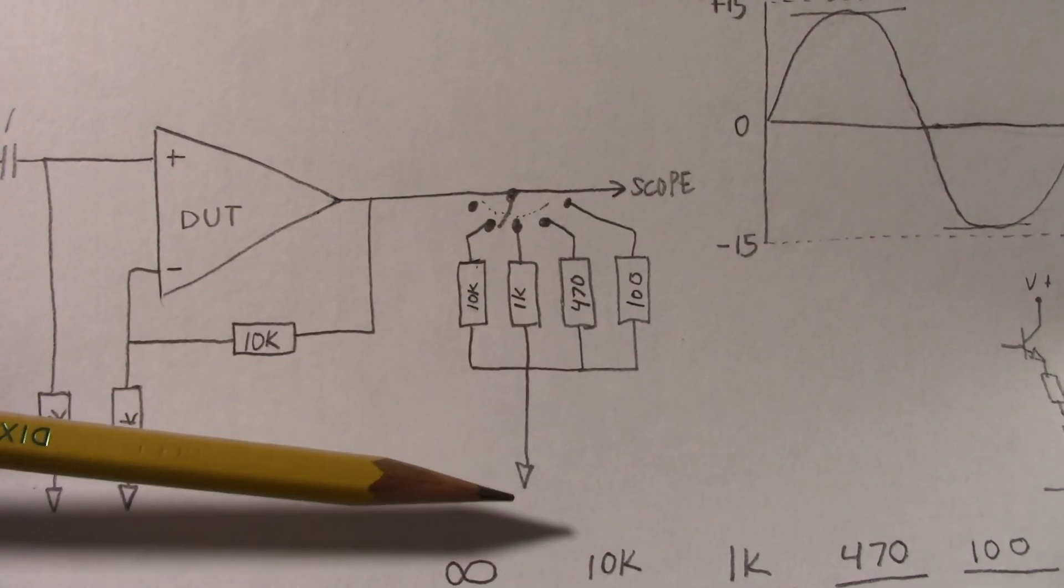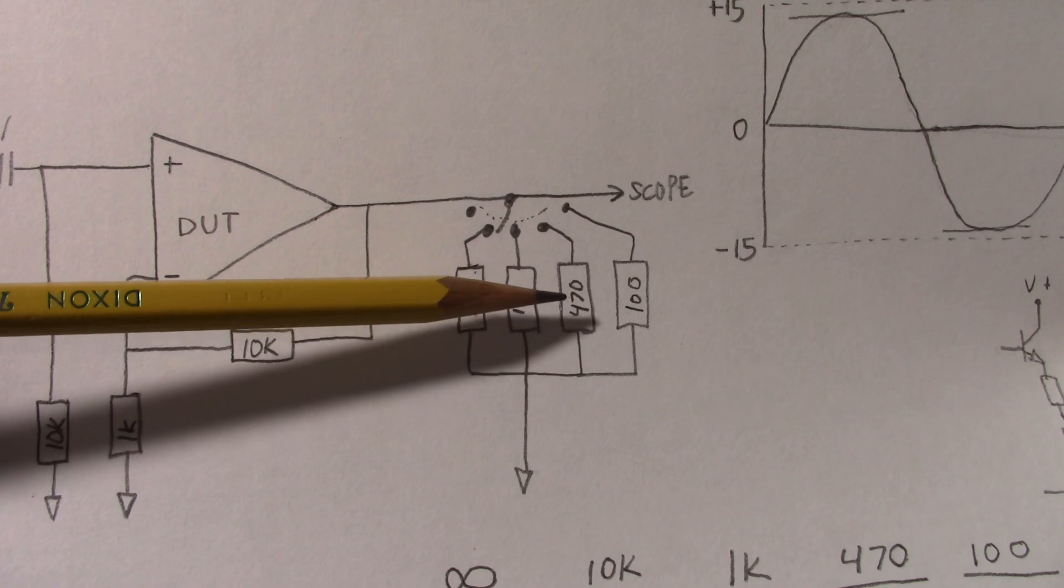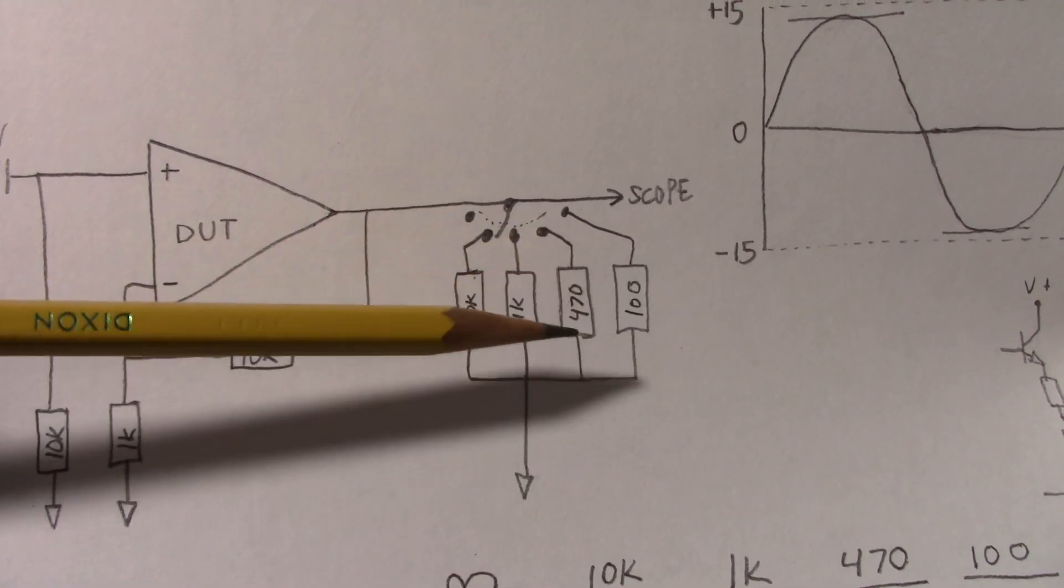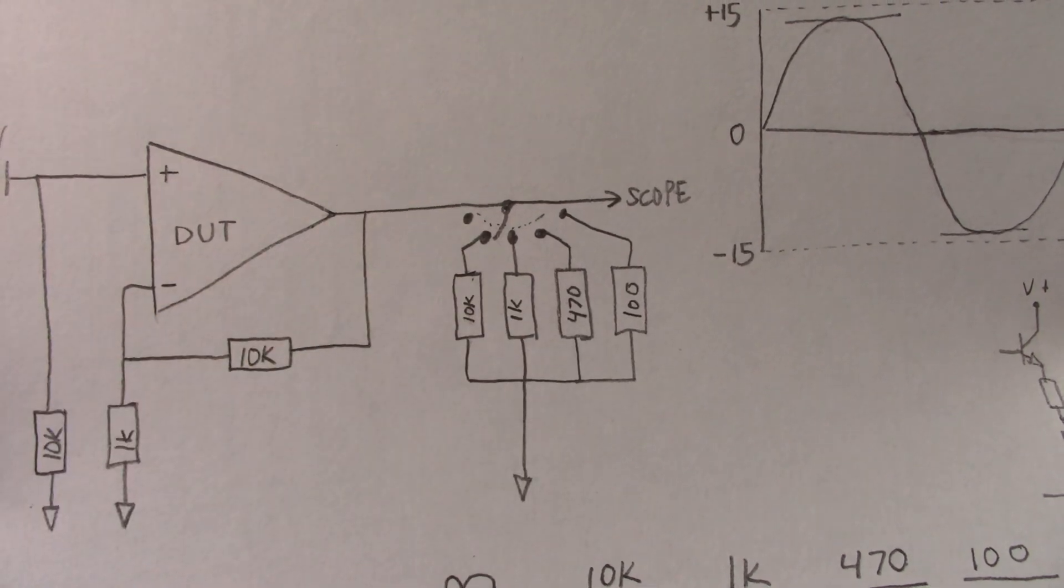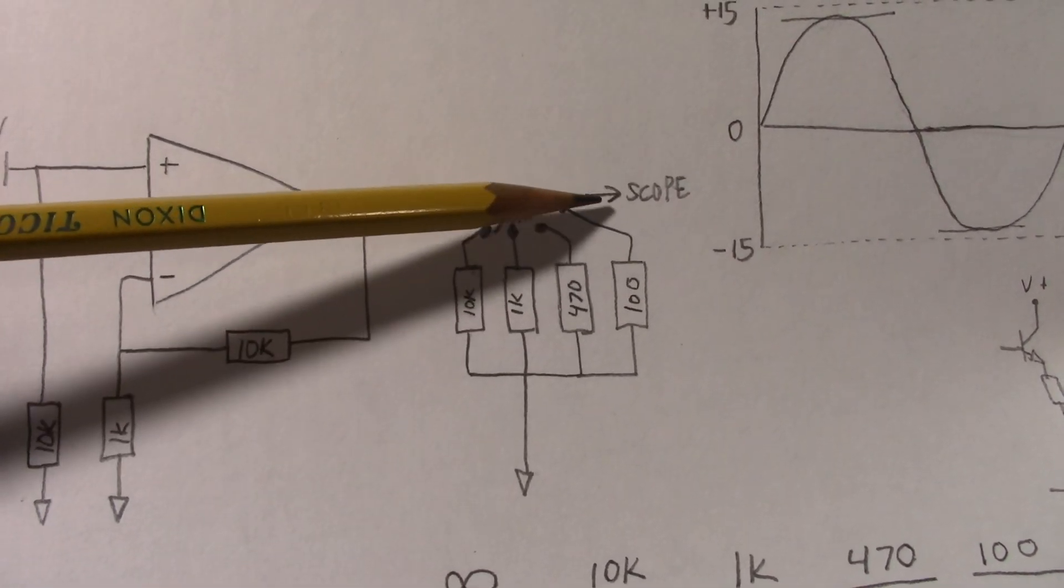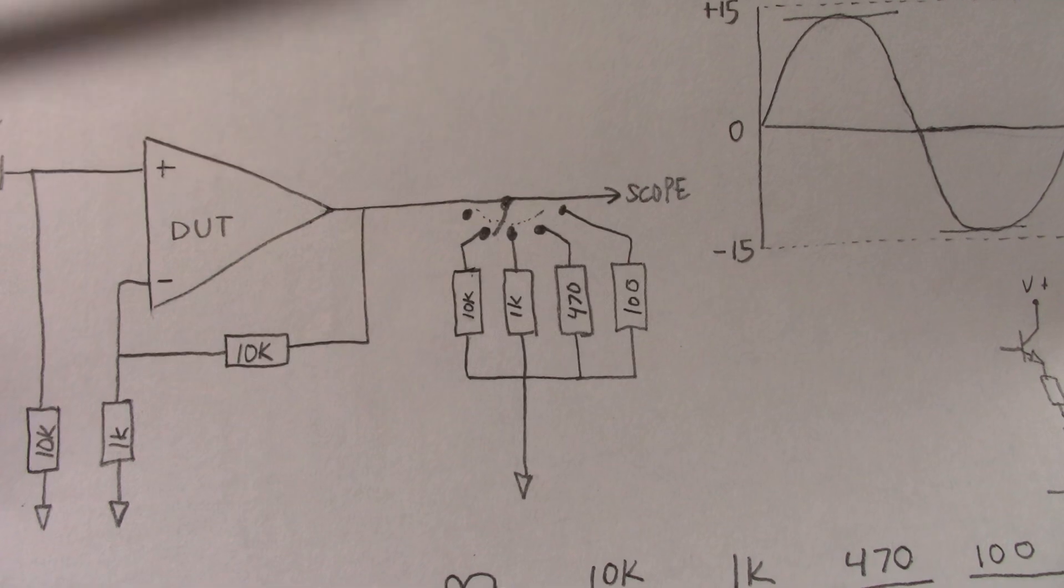In other words, lower and lower resistance value here. And we'll see how that affects the output swing. Of course, I'll connect the scope up to the output here and we'll monitor the waveform.